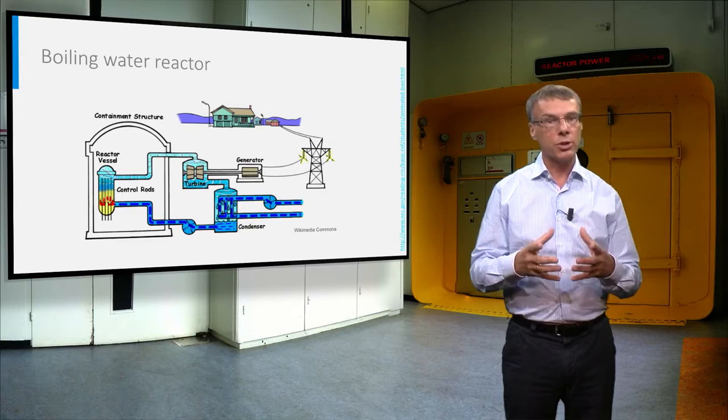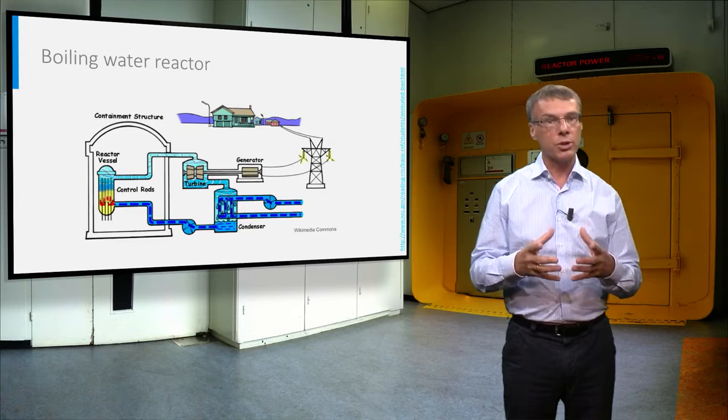Another type of reactor also works with water as a coolant, but at a lower pressure of around 70 bar and a temperature of about 285 degrees Celsius. As a result, the water starts boiling in the reactor vessel, and the steam produced drives the turbines directly.